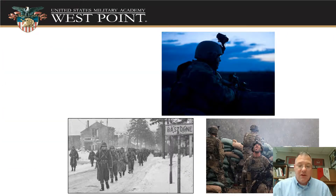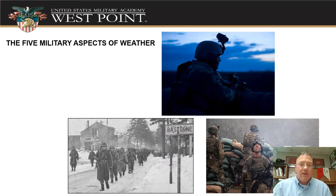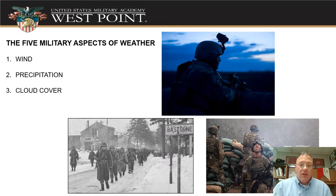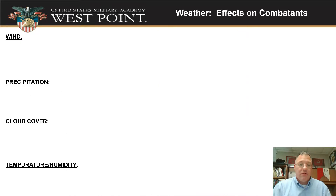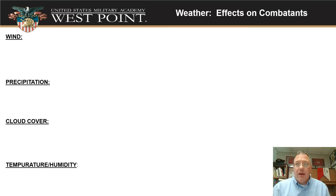When we talk about weather and combat operations, there are five military aspects of weather to consider in our analysis. The first one is wind, then precipitation — that's rain, snow, anything that falls out of the sky — then cloud cover, temperature and humidity, and visibility. Get a piece of paper and write down these five things.